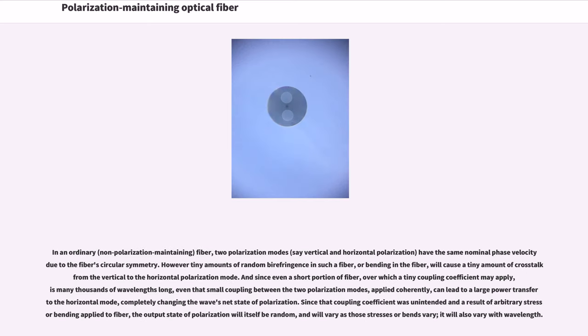In an ordinary fiber, two polarization modes have the same nominal phase velocity due to the fiber's circular symmetry. However, tiny amounts of random birefringence in such a fiber, or bending in the fiber, will cause a tiny amount of crosstalk from the vertical to the horizontal polarization mode. And since even a short portion of fiber, over which a tiny coupling coefficient may apply, is many thousands of wavelengths long, even that small coupling between the two polarization modes, applied coherently,